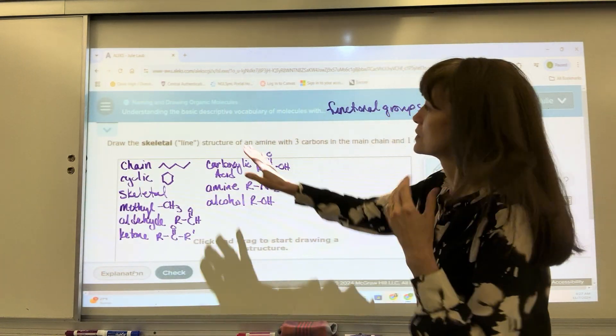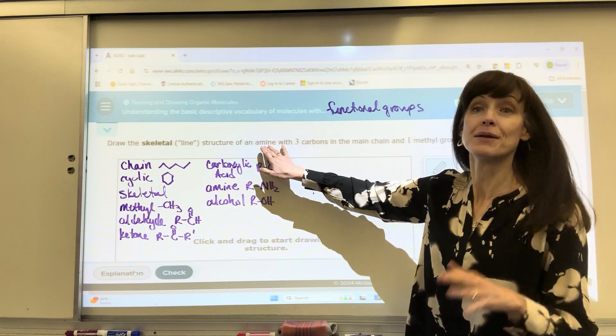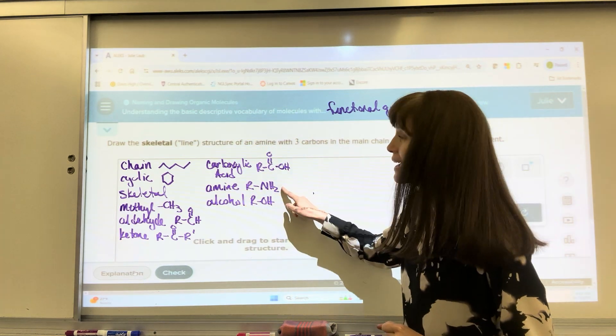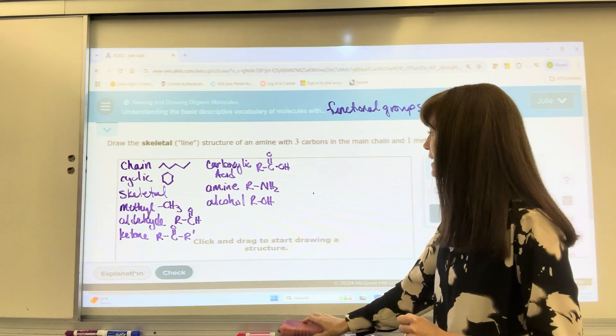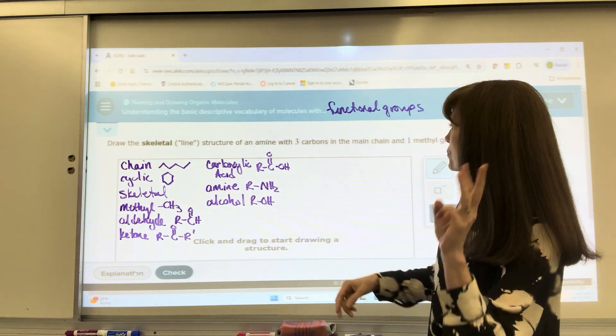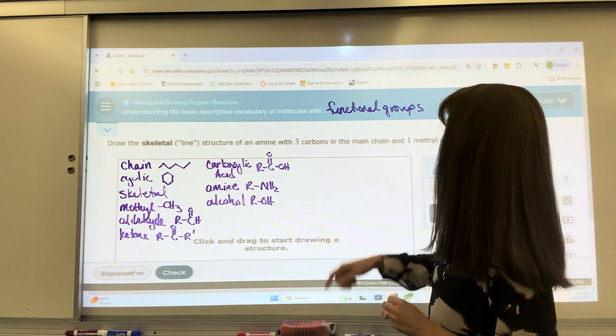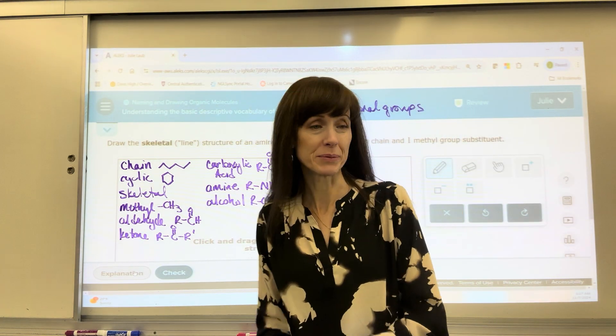Okay, so on this one, it says draw the skeletal line structure of an amine. Okay, so I pull up in my head. That's the nitrogen. I can put the NH2 anywhere I want with three carbons in the main chain and one methyl group.